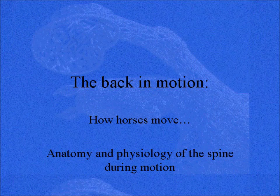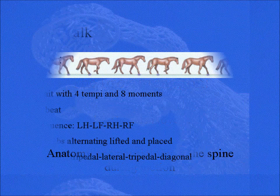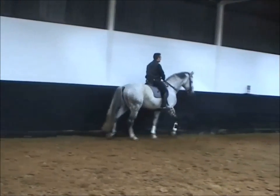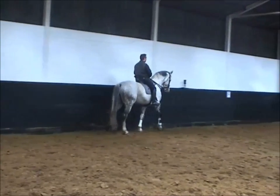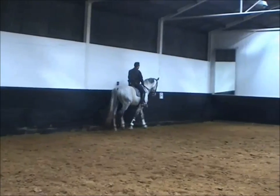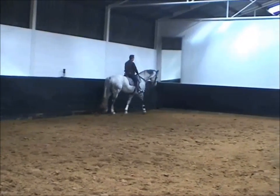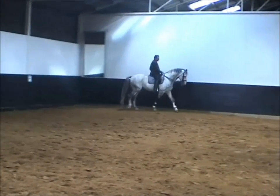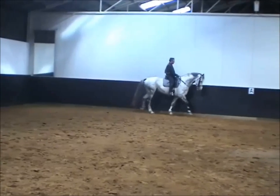Now let's look at the back in motion. How does a horse move? When we look at the walk, you can see it's a quite complicated gait — we have four tempi in eight moments, it's a four-beat gait, and you see all those legs go up and down. We have a slow motion video of that. When you look at the spine, there's not a lot of motion, but it's clearly there, and you can see a nice walk. The head goes up and down a bit, and that helps you a lot in understanding how the forces in that horse are propelled.